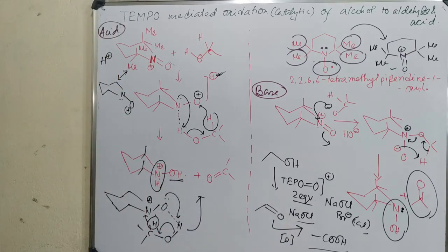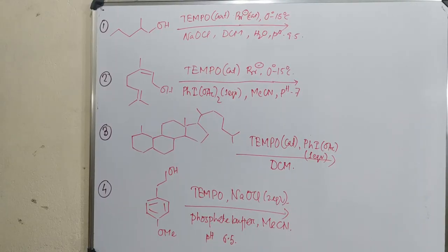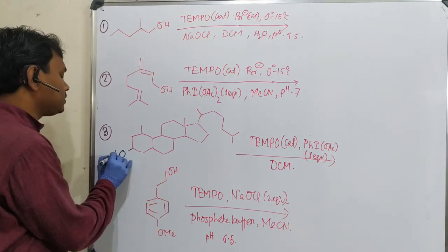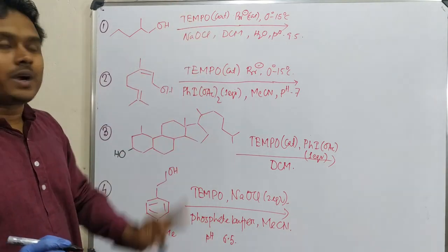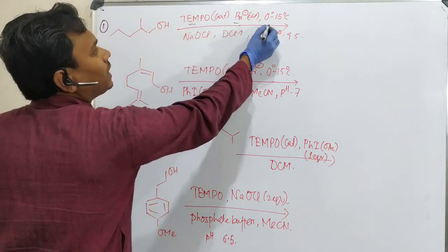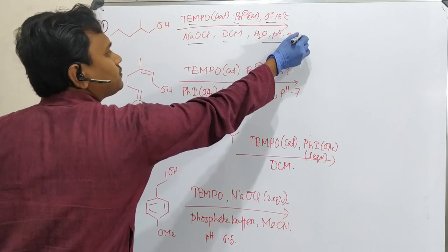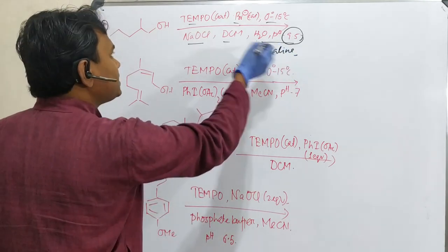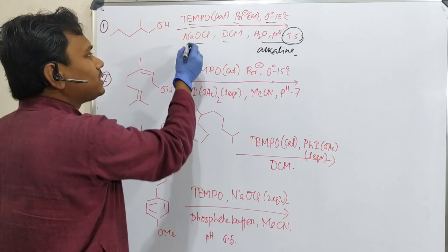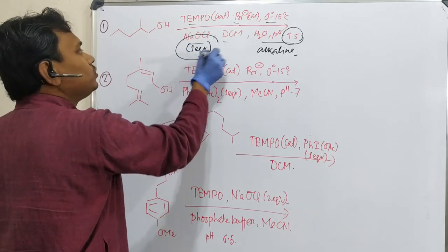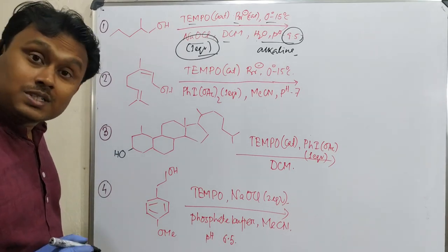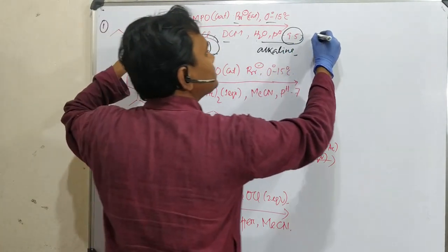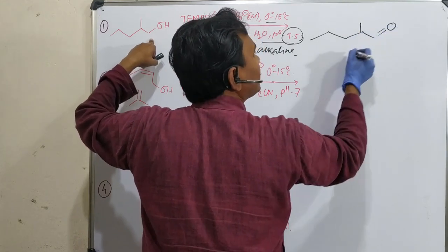Now let us discuss few examples. We will discuss four examples. The purpose to give you examples is for clear idea of what happens. Conditions are catalytic TEMPO, bromide 0 to 5 degrees centigrade, sodium hypochlorite, DCM, THF with the alcohol. Since oxidant is one equivalent and TEMPO is in catalytic amount, the product is conversion of this into aldehyde.